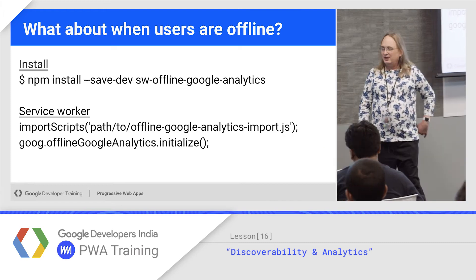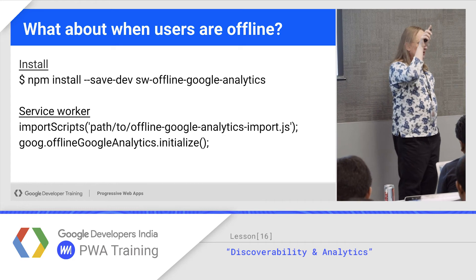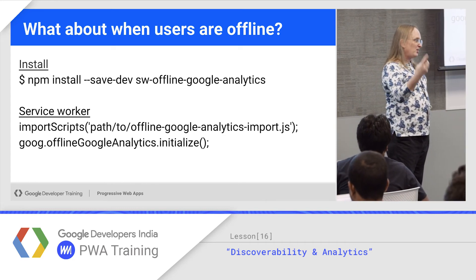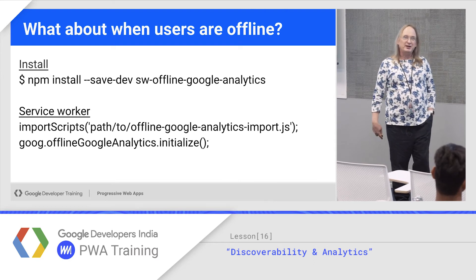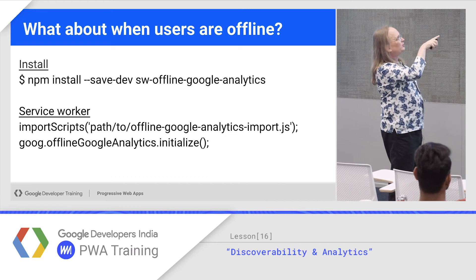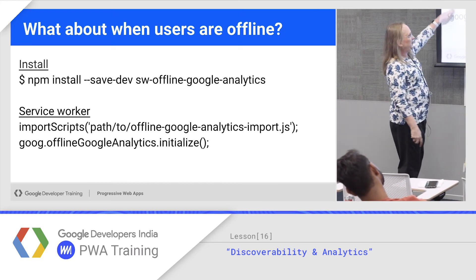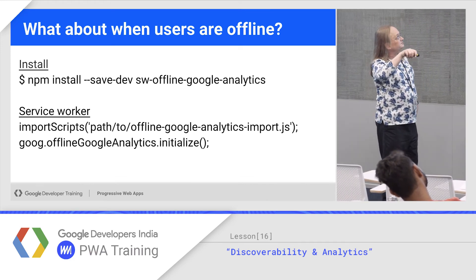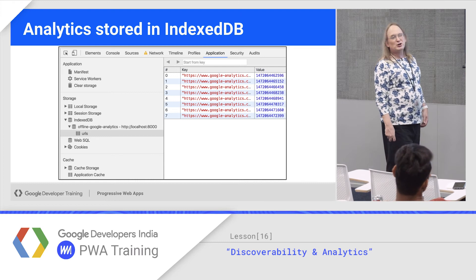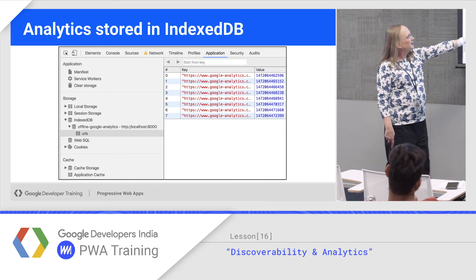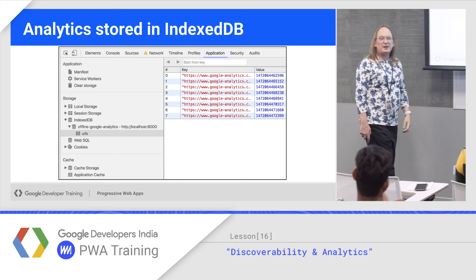What about if you're offline? The idea is basically to take those events and, instead of sending them to the server — because you can't — build the URLs and store them in the database. Then when you're back online, read the database and play back all the URLs. You could write this code, but you don't have to. As usual, we have an open source library called Offline Google Analytics — Service Worker Offline Google Analytics — that you go get from NPM. It's on GitHub. Import the script, initialize it, and use it to send your messages. If it can reach the server it will, and if it can't, it'll store them in IndexedDB.